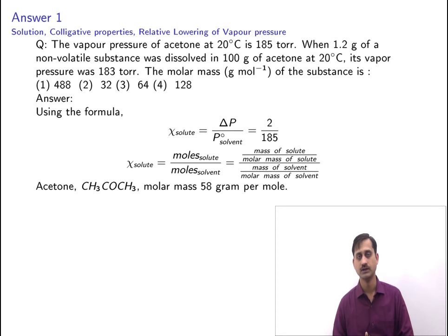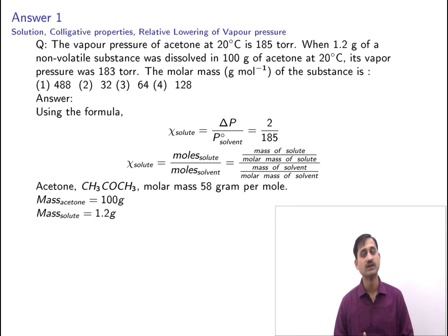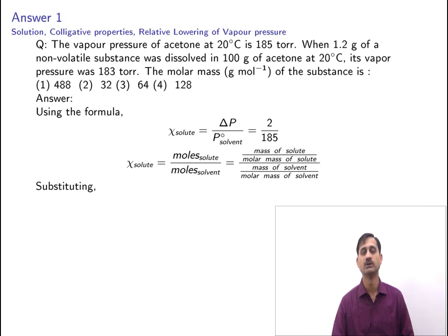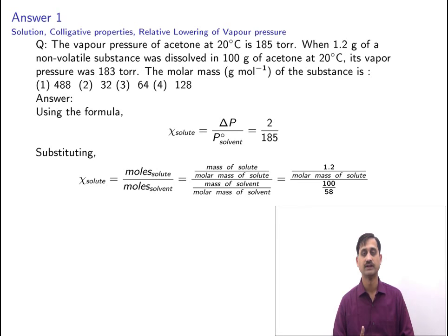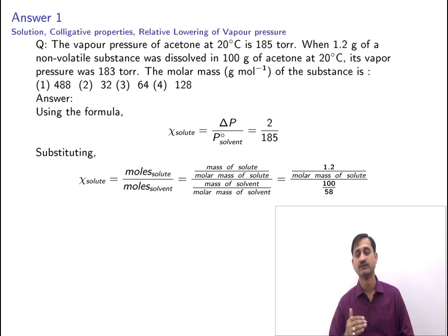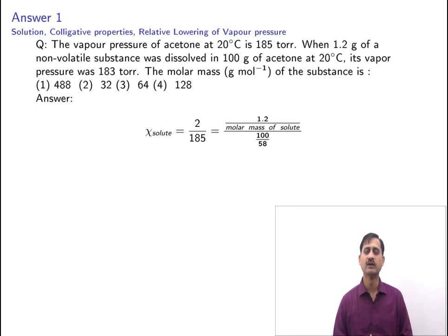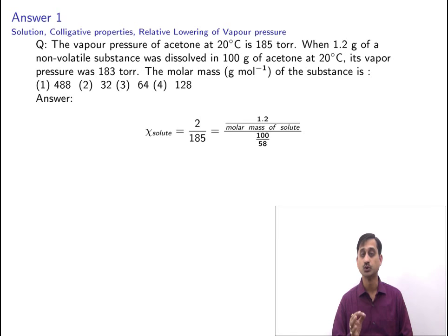The mass of solute is 1.2 grams. Substituting into the formula: χ(solute) = (1.2 / M_solute) / (100 / 58), where M_solute is the molar mass of the solute. Equating with the previously obtained mole fraction: 2/185 = (1.2 / M_solute) / (100/58). Solving, M_solute = (1.2 × 58 × 185) / (100 × 2) = 64.38, approximately 64 g/mol.